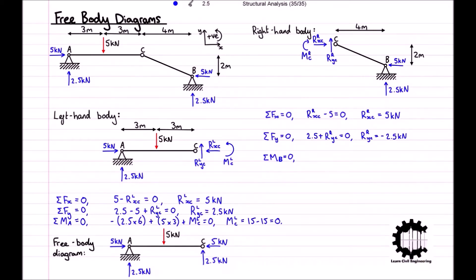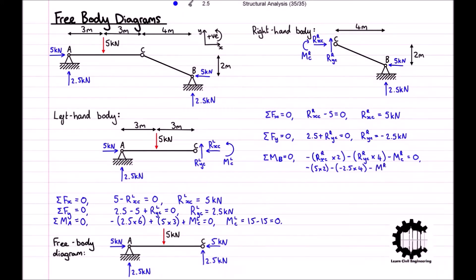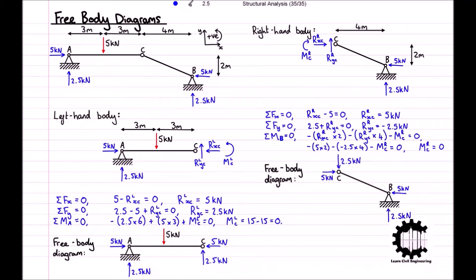Taking the anticlockwise rotation direction to be positive, we get negative RXC times 2 minus RYC times 4 minus MC equals zero. Substituting in our values for RXC and RYC, we get negative 5 times 2 minus negative 2.5 times 4 minus MC equals zero. Rearranging for MC, we get MC is equal to 10 minus 10, which equals zero. So for the right-hand body of the structure, we can apply these forces to the diagram, giving us the following free body diagram.